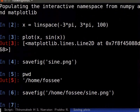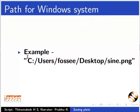Note that the above file path is for Linux based file system. For Windows, give the entire file path as shown here. Here fossee is the username in Windows and sine.png file is to be saved on desktop.